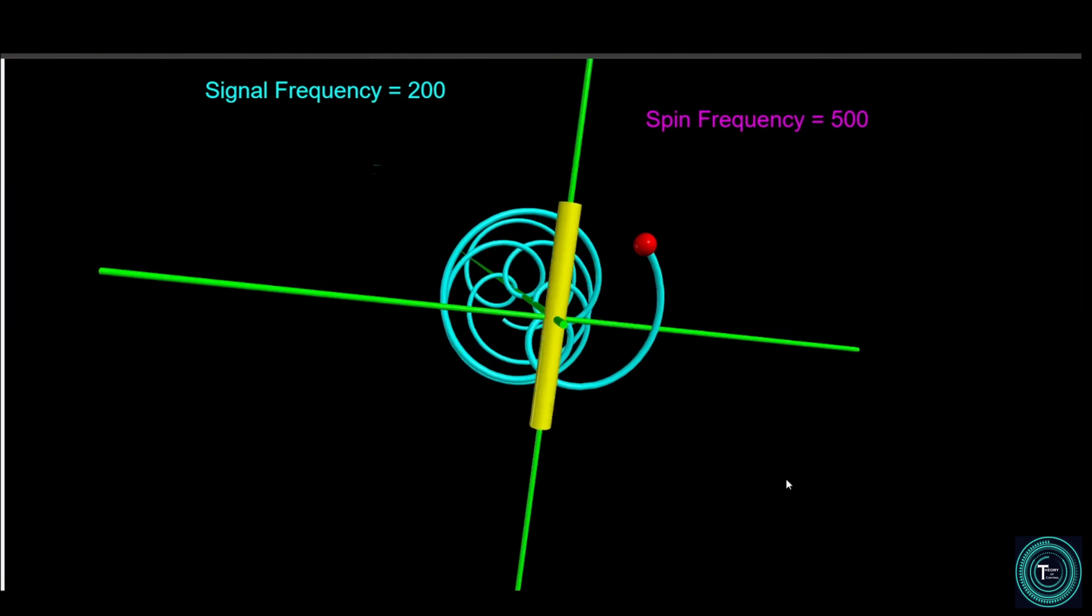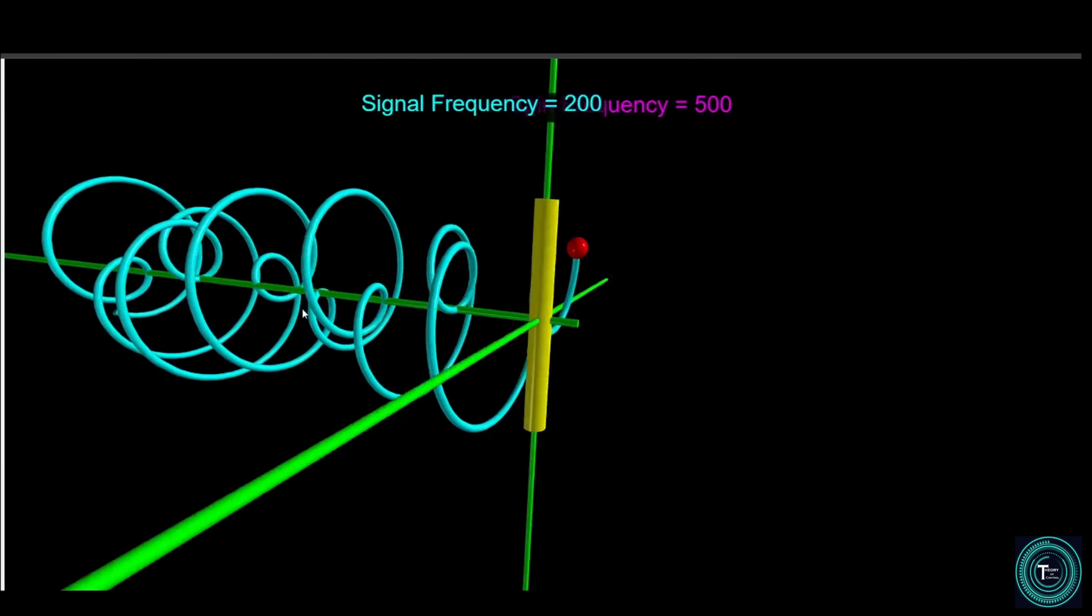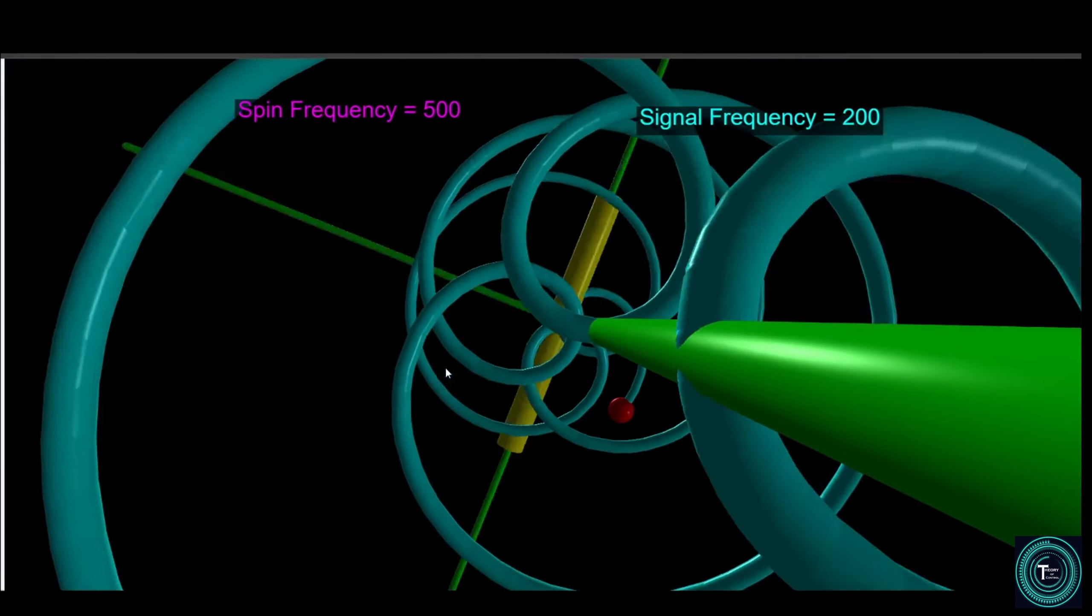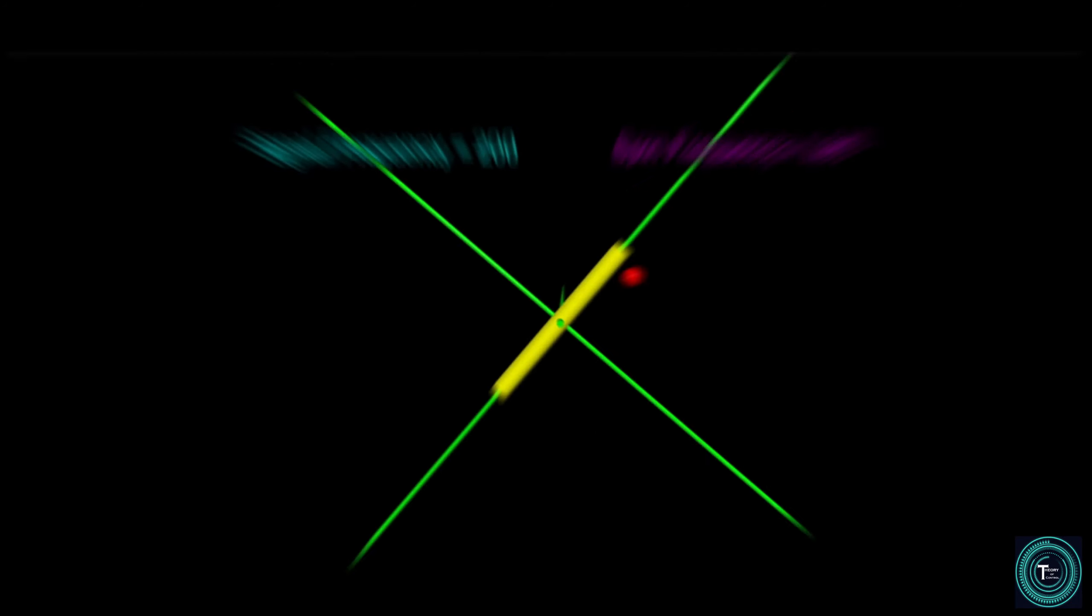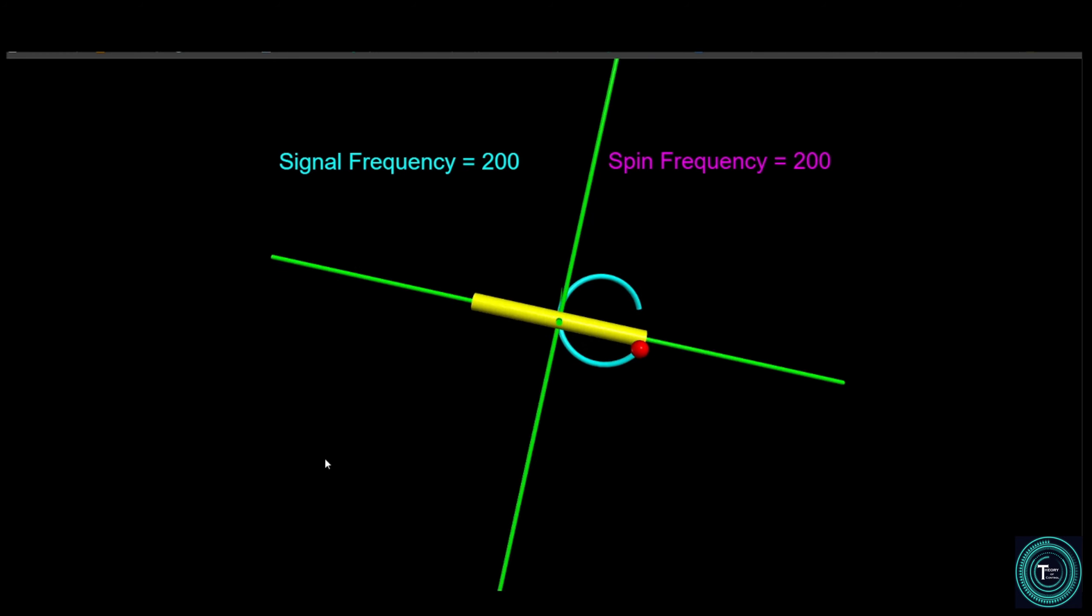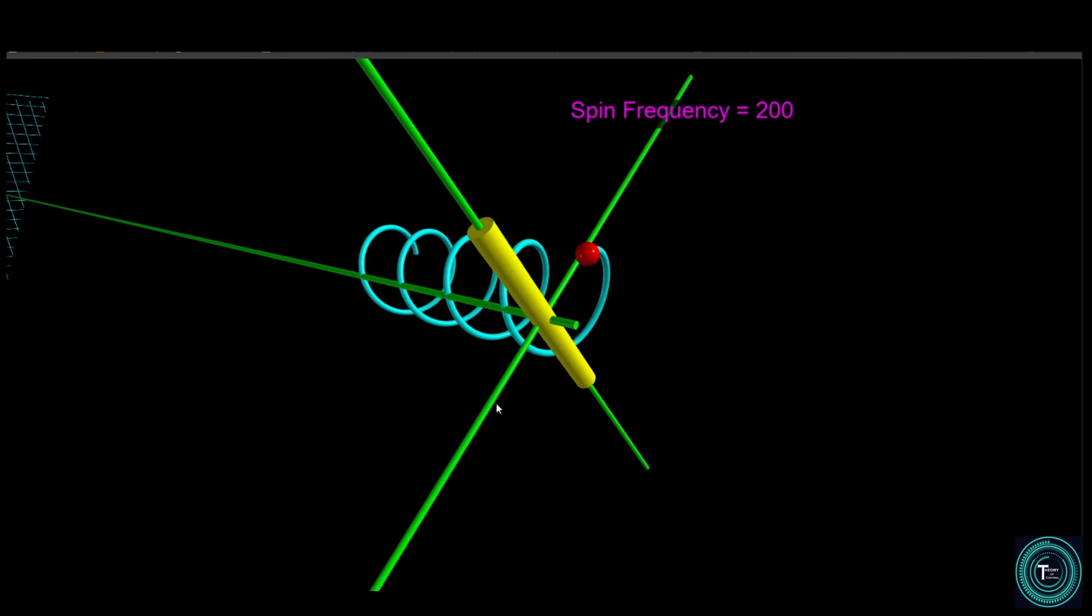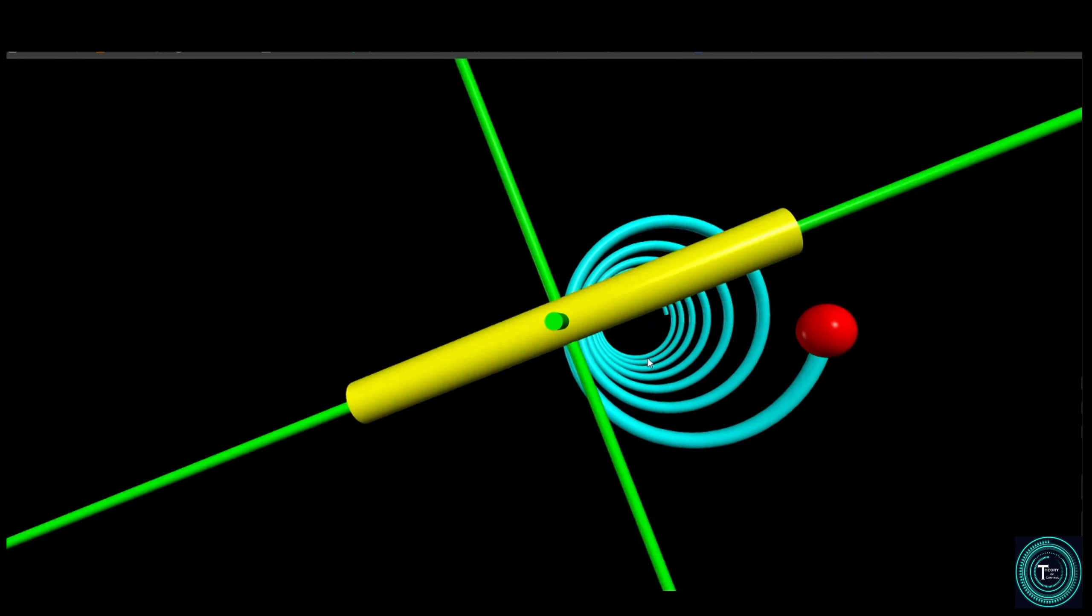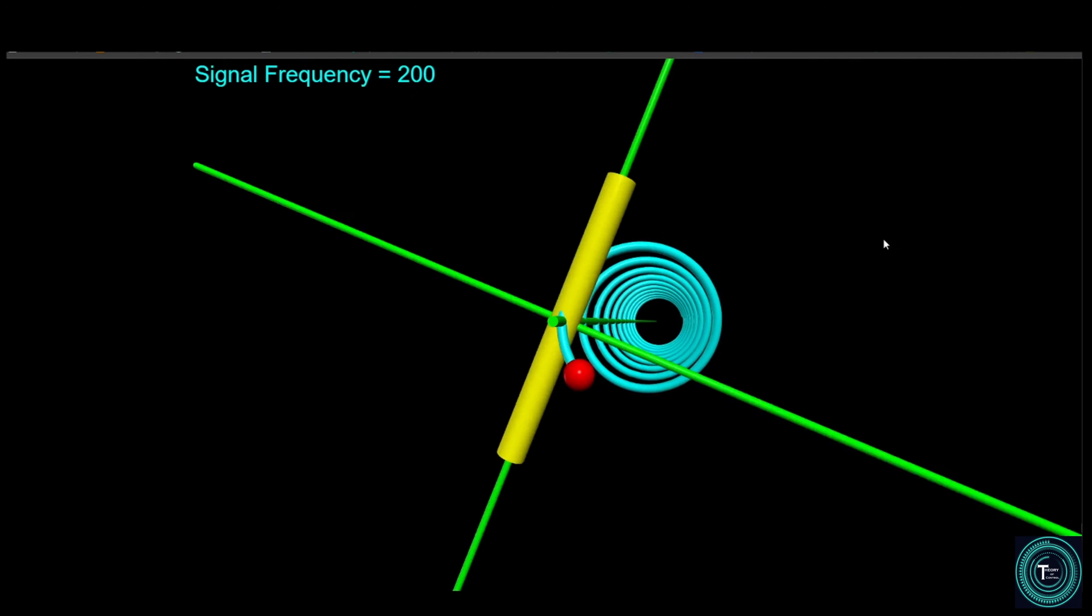Observe how the graph is always evenly distributed and symmetric around the time axis. In other words, the center of the graph is always aligned with the center of our function at zero. Now observe carefully what will happen when the spin frequency matches the signal frequency. Notice how the whole graph is shifted away from the time axis and no longer symmetric around the time axis, as opposed to when the two frequencies did not match.